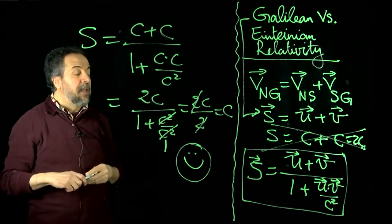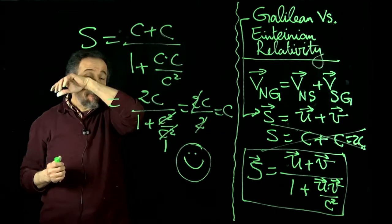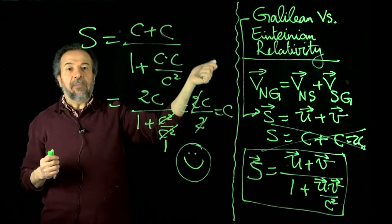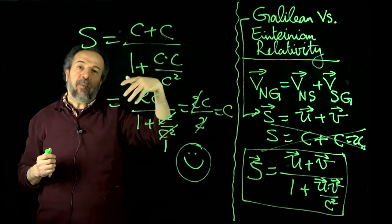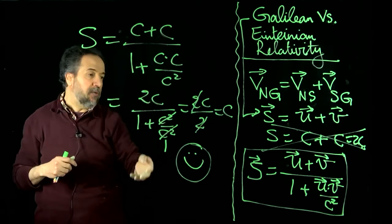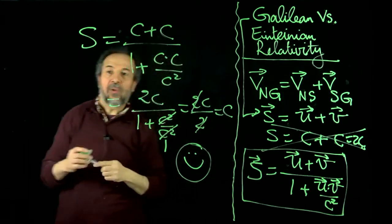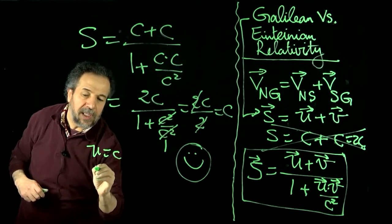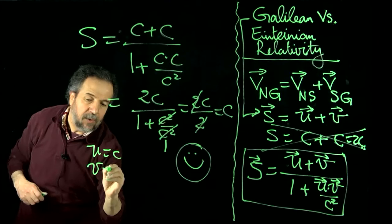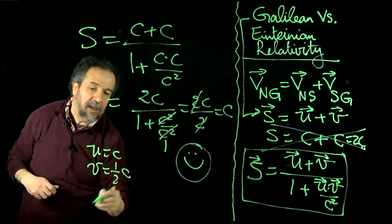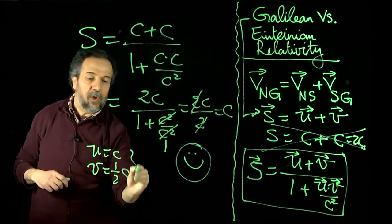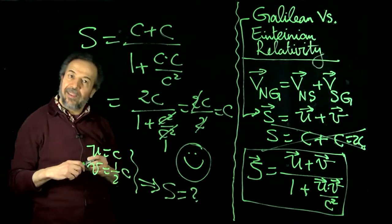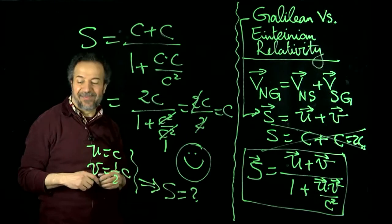Now, of course, if, for example, let's say we're dealing with a situation where you shine a light beam in a situation where the spaceship, let's say, for example, is moving at half the speed of light, then you would have to do, in other words, we're saying, let's say U is equal to C, V is equal to half C, okay? I'll leave it to you to work this out to see what would the S be in this case. Thank you very much. That's it. Thank you.